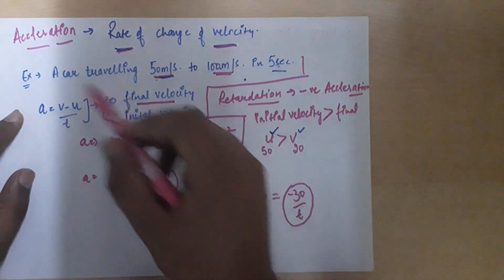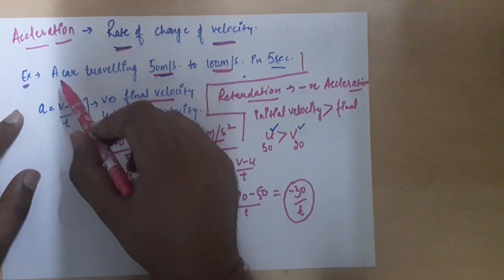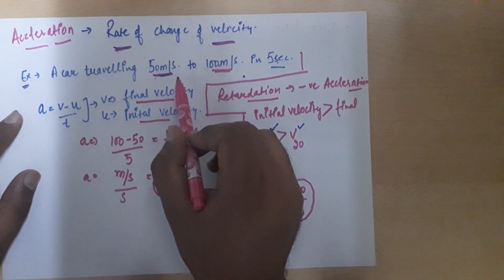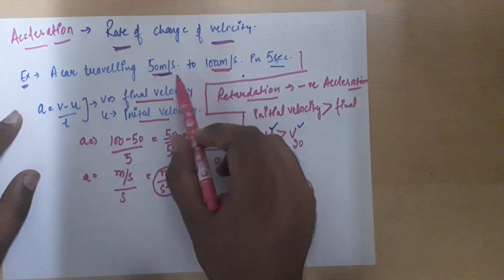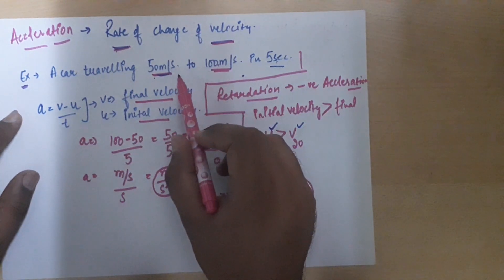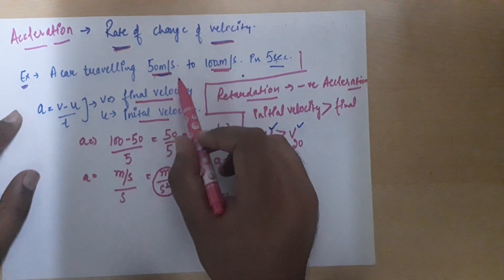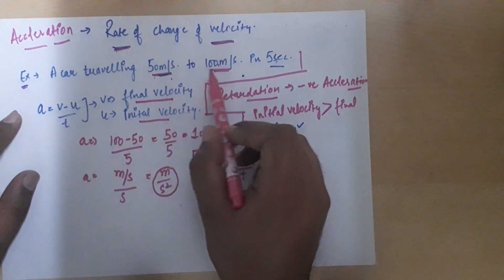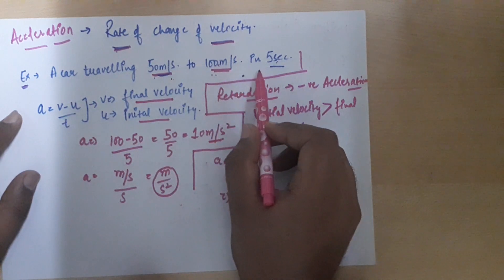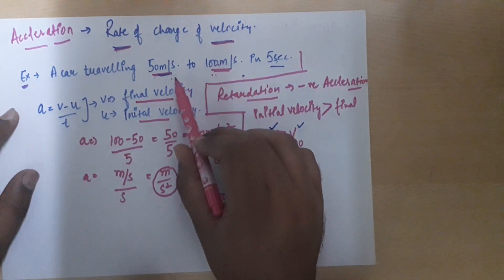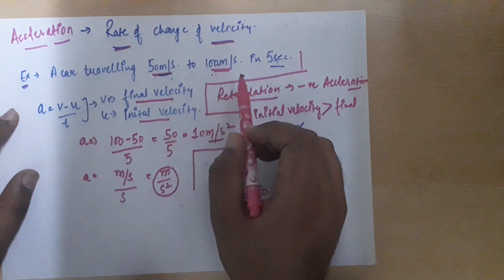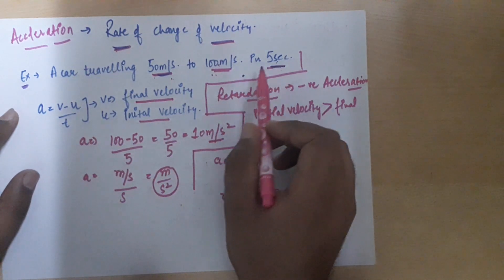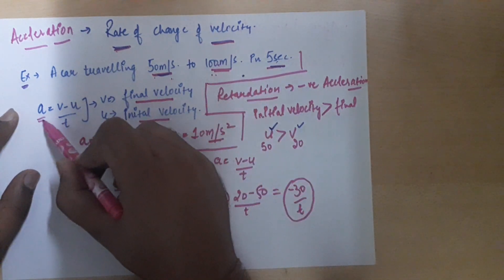Here we have an example: a car is traveling at 50 meters per second. The driver increases the speed from 50 meters per second to 100 meters per second. Since the speed changes from 50 to 100, it takes some time — that is five seconds.